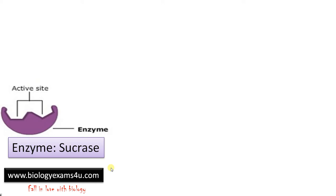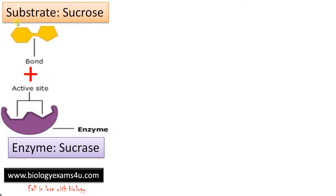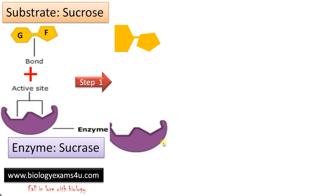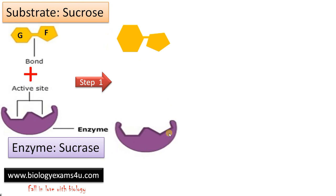Sucrase is capable of hydrolyzing sucrose. All enzymes have an active site where the substrate binds — it is a three-dimensional region on which the substrate binds. Here we have the enzyme sucrase, and this is the substrate sucrose. As we know, sucrose is a disaccharide made up of glucose and fructose joined by a glycosidic bond.